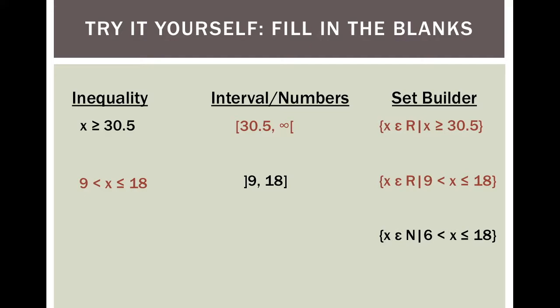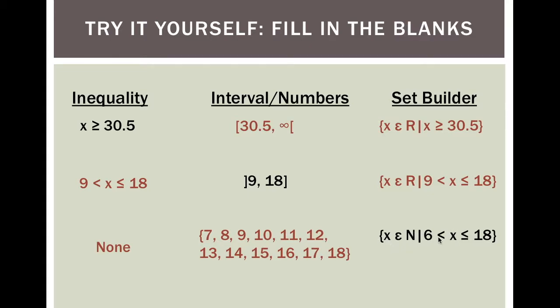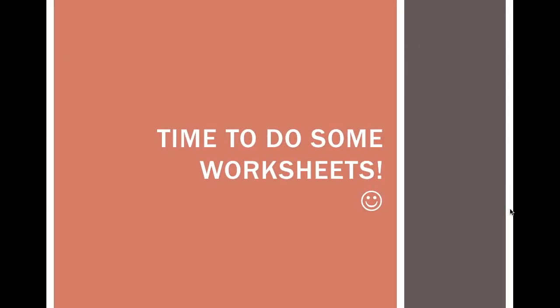Then finally, X is in N — natural numbers — such that 6 is less than X less than or equal to 18. In this case, there's no interval notation because we're restricting it to the natural numbers. These are the natural numbers between 6 and 18, including 18. And now you will be doing some worksheets on interval notation, set builder, and number lines with inequalities.